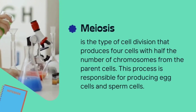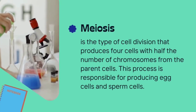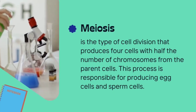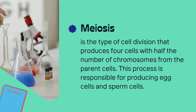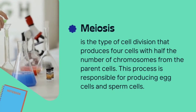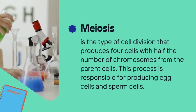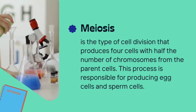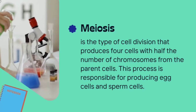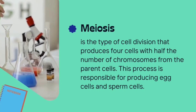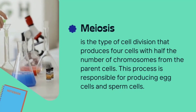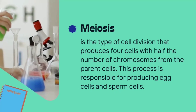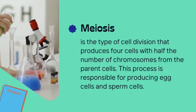Meiosis is a type of cell division that produces four cells with half the number of chromosomes from the parent cells. This process is responsible for producing egg cells and sperm cells.